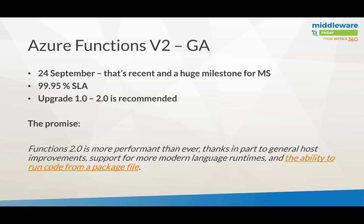Version two is being released. When you watch this episode it's basically done — released this week, the 24th of September. It's been viewed as a huge milestone by Microsoft, guaranteeing a 99.95% SLA. They recommend updating from version one to 2.0 because it's more performant, has a smaller footprint since it's based on .NET Core while version one is the full .NET framework, and it has more support for modern languages and the ability to run code from a package file.